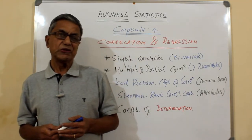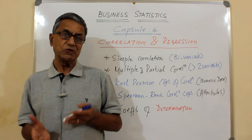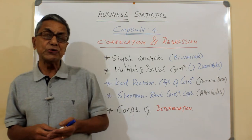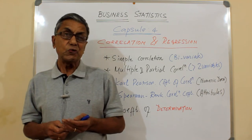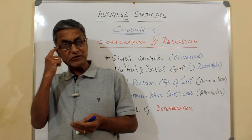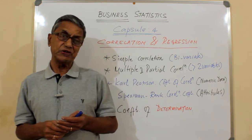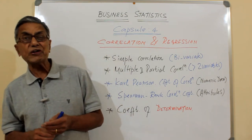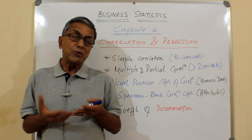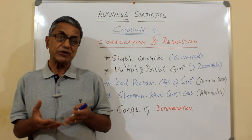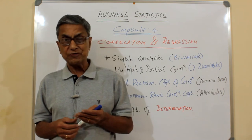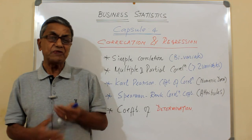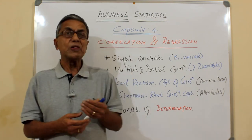Let us take another example. The sales growth over a period of several years in a manufacturing organization could be due to many factors. One factor could be marketing and advertisement; another could be good R&D effort in terms of innovation and new product introduction. A third factor could be improved productivity — through more automation, bringing down the cost of manufacture.